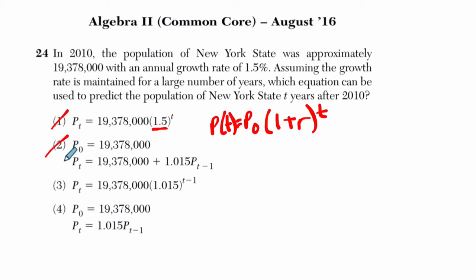2 is also out. 2 says that the starting population is correct, but then what they're doing is they're taking the initial population and they're adding 1.015 times P of T minus 1. Now, why would that be wrong, right?